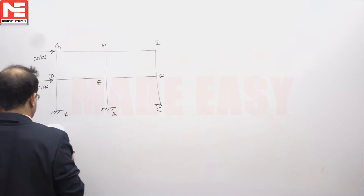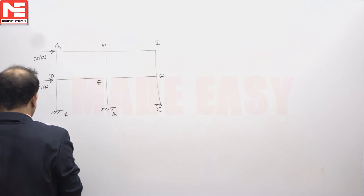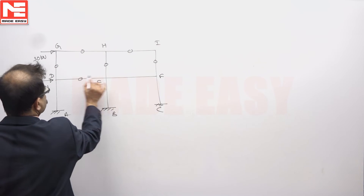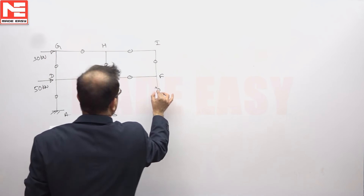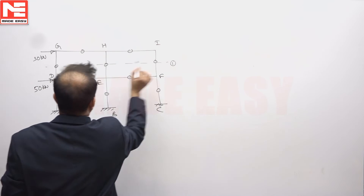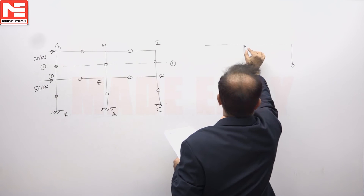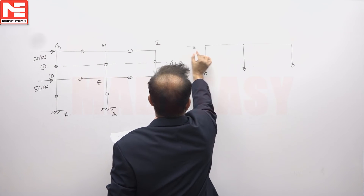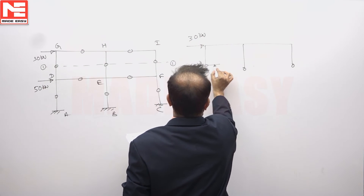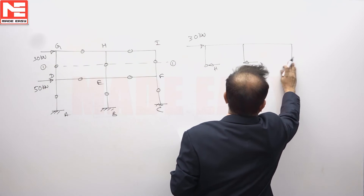As per the Portal frame method, the point of inflection is assumed to be located at the midpoint of each beam and column. This load is 30 kilo Newton. Exterior columns will take H, interior columns will take 2H, and H.